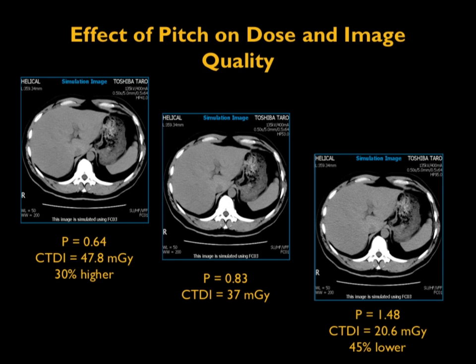Shown here are three simulated images demonstrating the effect of pitch on radiation dose and image quality. The center image is obtained with a pitch of approximately 1 (0.87), with a CTDI of 37 mGy. The upper left image is obtained with a pitch of 0.64 — a lot of overlap — resulting in a CTDI of 47.8 mGy, indicating about 30% higher dose. The bottom right image is simulated at a pitch of 1.5, resulting in a CTDI of 21 mGy, approximately 45% lower. The take-home message is: higher pitch means lower dose; lower pitch means higher dose due to overlapping tissue exposure.